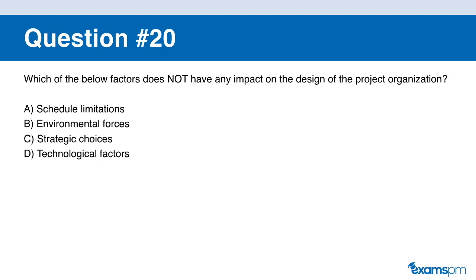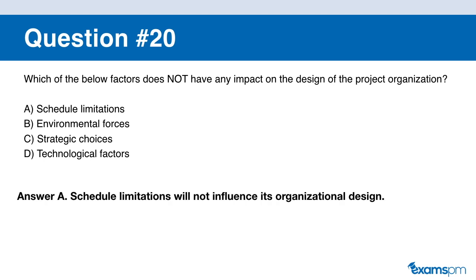Question number twenty. Which of the following factors does NOT have any impact on the design of the project organization? A: schedule limitations. B: environmental forces. C: strategic choices. D: technological factors. If you said A, you are correct. Schedule limitations will not influence organizational design.